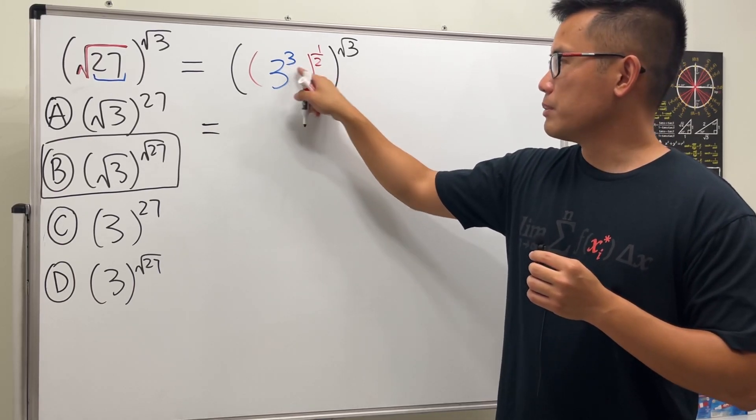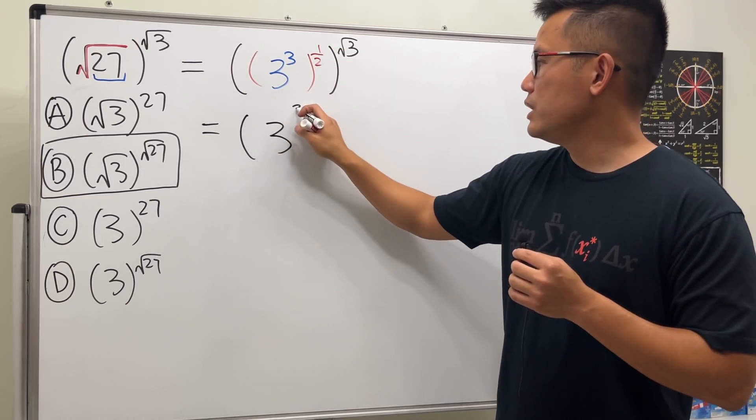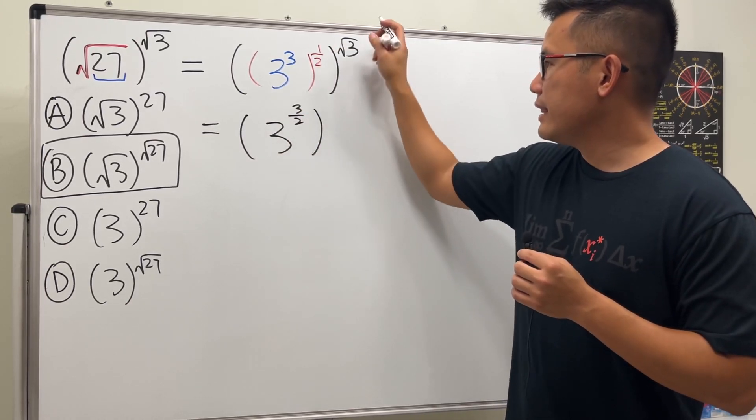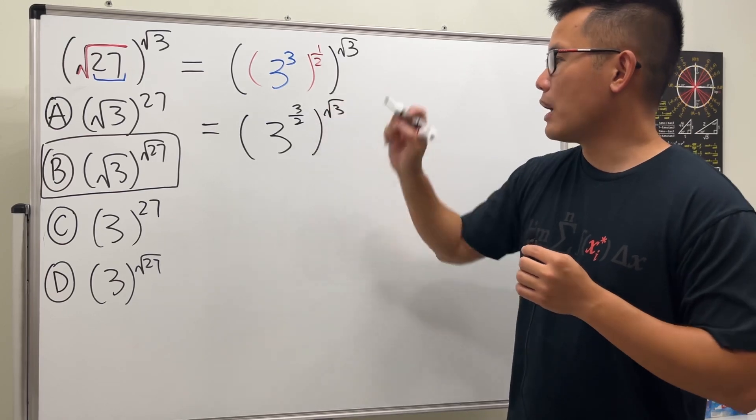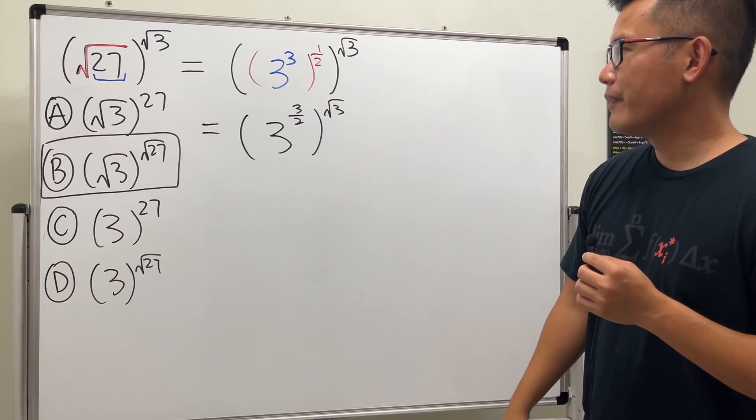So this is good because now we can just multiply this and that, so multiply the powers. So the inside is going to give us 3 raised to the 3 over 2 power, and then we still have the square root of 3 power.